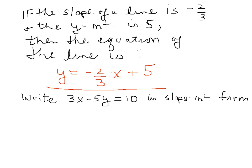The first thing I'll do is subtract 3x. So I'll get -5y is equal to -3x plus 10. Then I'm going to multiply both sides by -1/5, and I get y is equal to 3/5 x minus 2.